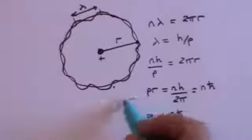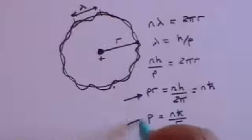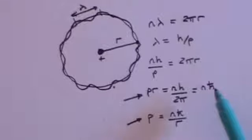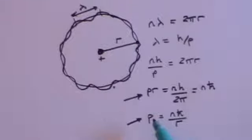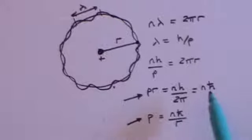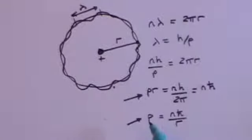Now what is pr? pr is angular momentum. What is p? p is momentum. And what does this tell us? That angular momentum comes in integer values of ħ. The momentum comes in integer values of ħ/r. In other words, angular momentum and momentum are both quantized — they come in units of ħ. You can't just have any old angular momentum; you have to have it in units of ħ. Similarly for momentum — not just anything goes; there are discrete values which are permissible.